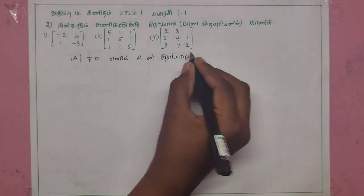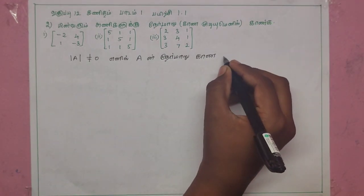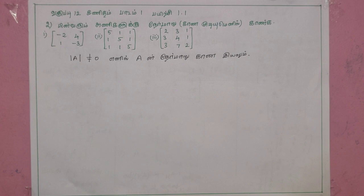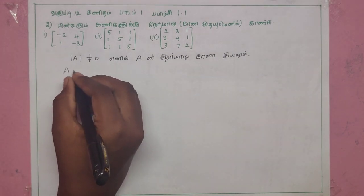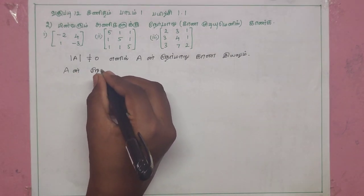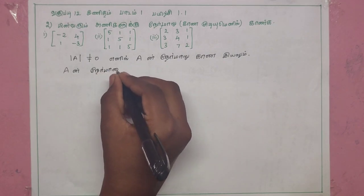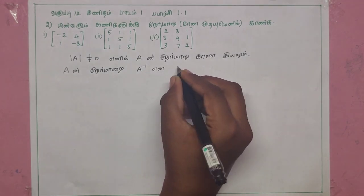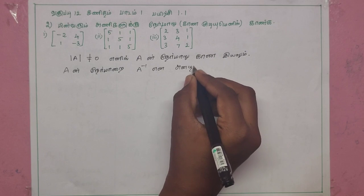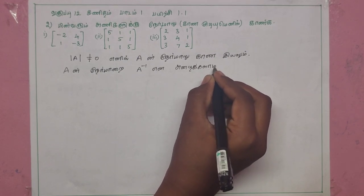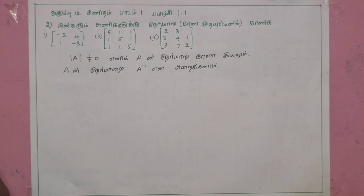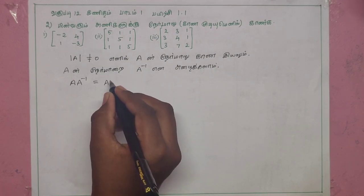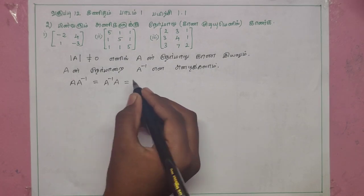This property is called the inverse. A inverse times A, and A times A inverse, equal I. A inverse times A inverse, and A inverse times A inverse equal to Iₙ.